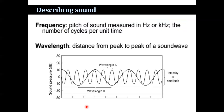Two important terms in echolocation are frequency and wavelength. Frequency is a property of sound measured in hertz or kilohertz — it is the number of cycles per unit time. Wavelength A is the distance between two wave cycles, while wavelength B is the distance from one peak to another peak of the sound wave.